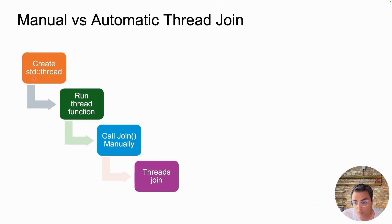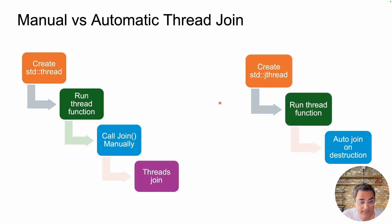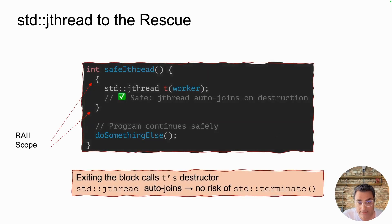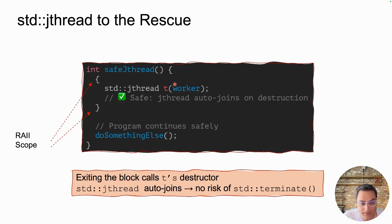This is a summary of the workflow with classic std::thread: you create a thread, run the thread function, call join manually, and then the thread joins. std::jthread improves this — you create the thread using std::jthread, your worker function runs in a separate thread, but the join happens automatically on destruction. Here is an example — notice that now I create my thread using jthread instead of std::thread, and once I go out of the curly braces, jthread will call t.join automatically in its destructor, so we don't have to call it explicitly.